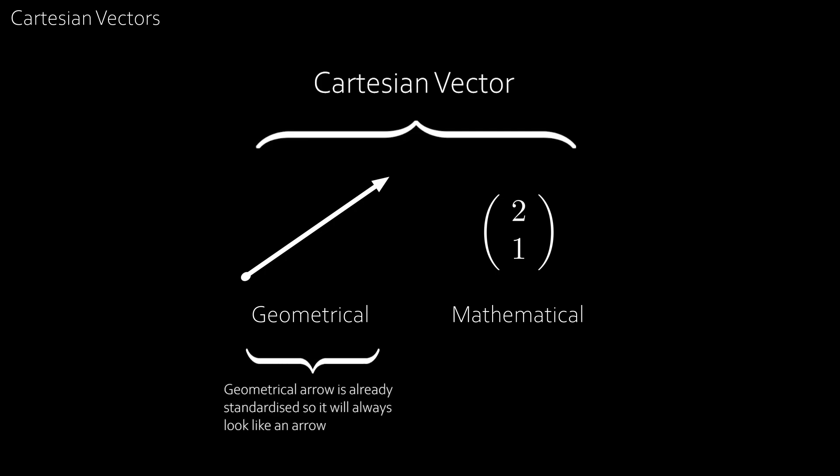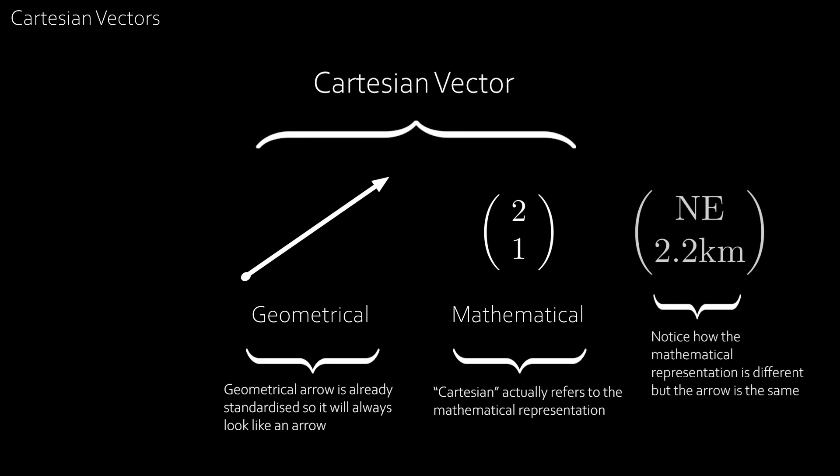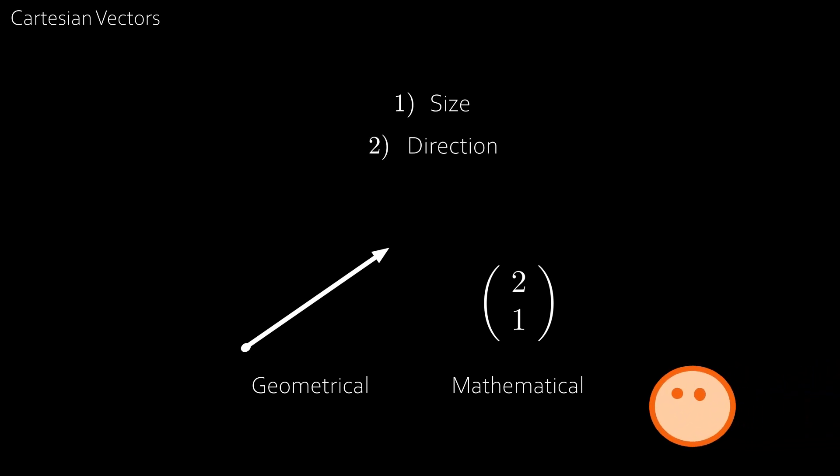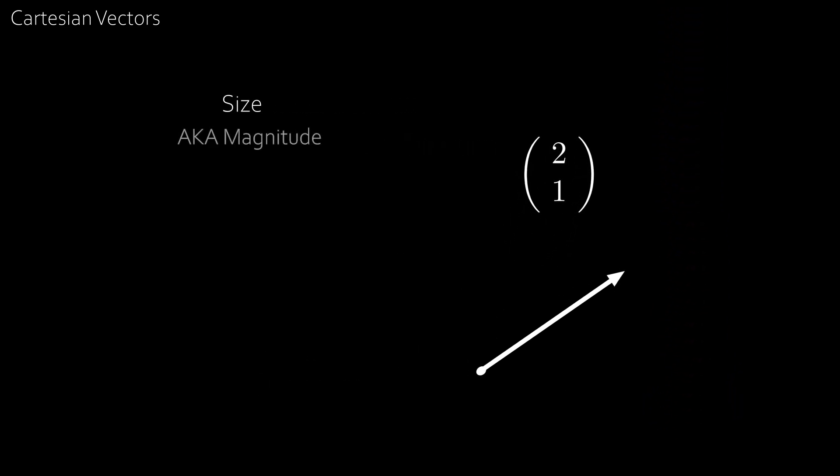You can see the geometrical views look the same, but the mathematical view is different to what we had before. If we wrote the vector like we did before, it would be north-east and 2.2 kilometres. But vectors describe a size and direction. So where is the size and direction in this mathematical vector? Let's start with the size, also known as the magnitude. We know that this vector means 2 across and 1 up. And you can see that we have a triangle, and good old Pythagoras can help us out to get the magnitude, which in this case is square root 5. So, if we had any Cartesian vector where a and b can be any number, then we know the size of the vector is just square root of a squared plus b squared.